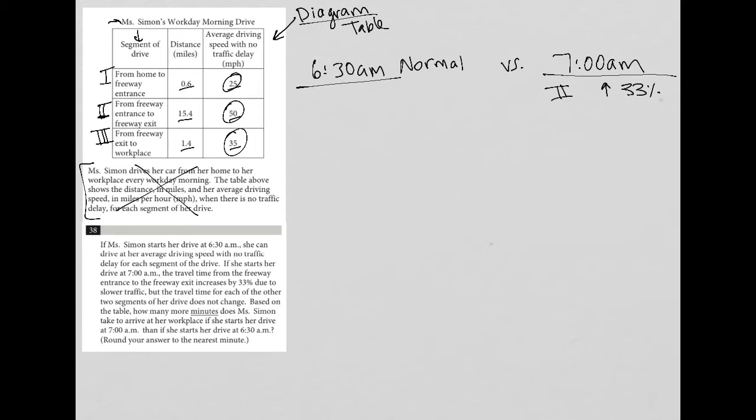Based on the table, how many more minutes does Ms. Simon take to arrive at her workplace if she starts at 7 AM than at 6:30 AM? Round to the nearest minute. We need to figure out how long it takes at 6:30 AM first.